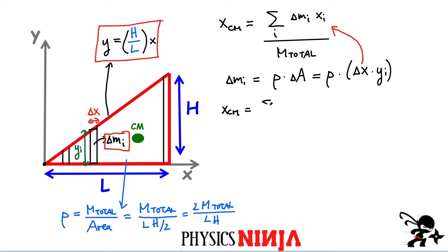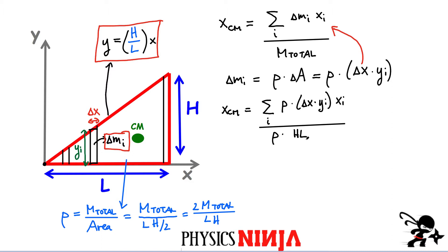X center of mass equals the sum over each delta M times X_i, substituting: density times Y_i times delta X times X_i, all divided by the total mass — which is density times area, density times H times L over two. The densities cancel. We're left with two over HL times the sum of X_i times Y_i times delta X.